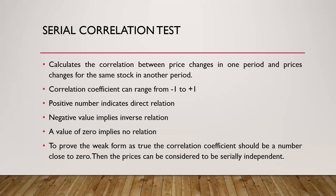The correlation coefficient can get a value ranging from negative 1 to positive 1. If you get a positive number, it means there is a direct relation between the prices of two periods of the same stock. If the value is negative, there is an inverse relation — when one price increases the other decreases. If the value is zero, it means there is no relation between the prices of both periods. In order to prove weak form efficiency as true, the correlation coefficient should come to a value close to zero, meaning prices are serially independent and therefore weak form efficiency can be proven as true.